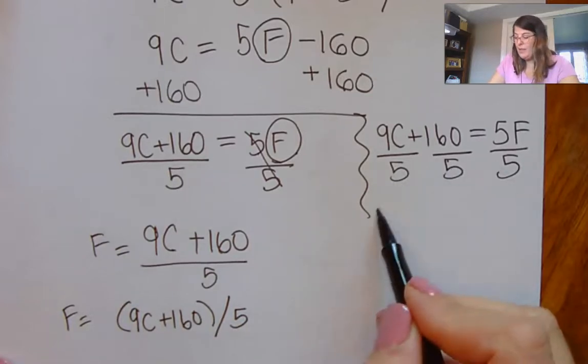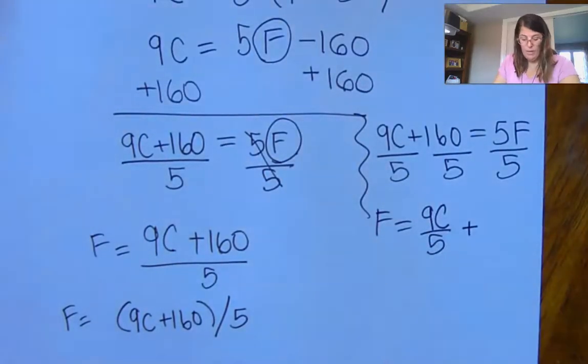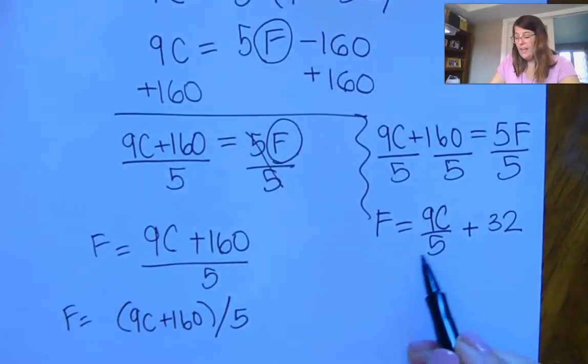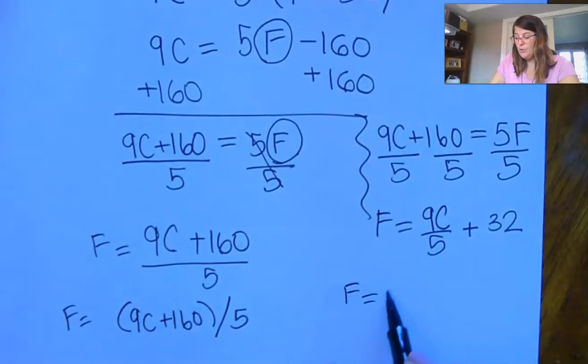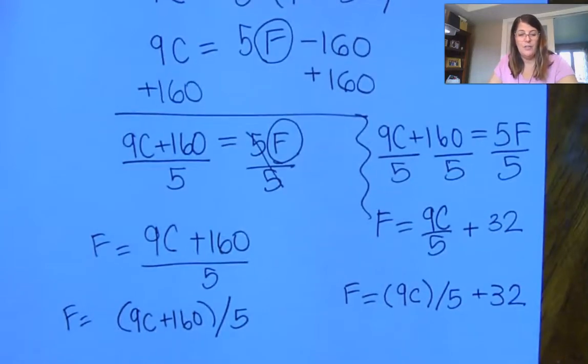If you did it this way, you would have F is equal to 9C over five plus what's 160 divided by five? 32. So now if you're going to type this into Buzz, you would say 9C in parentheses divided by five plus 32. And use that equation editor to verify to make sure it looks the way you want it to.